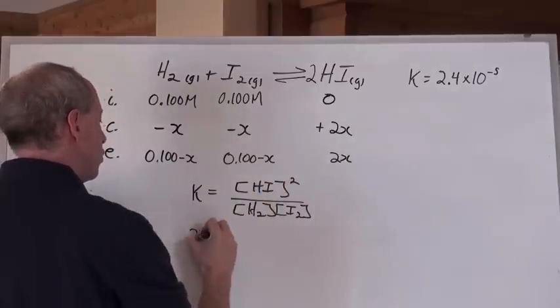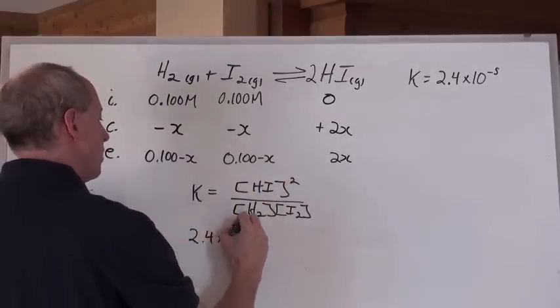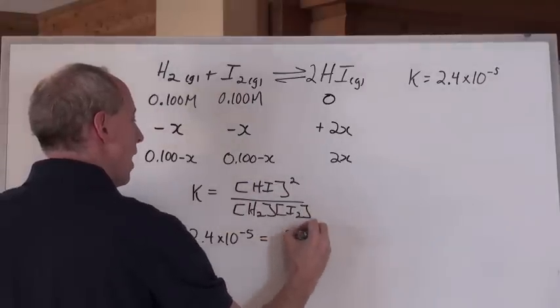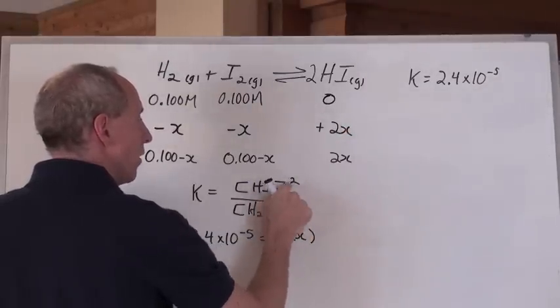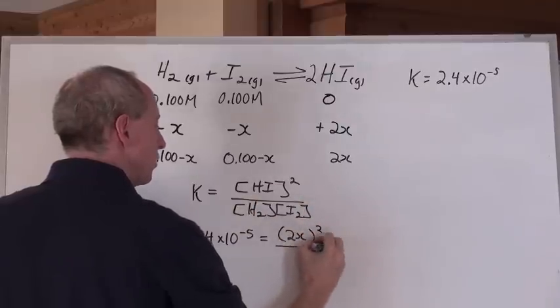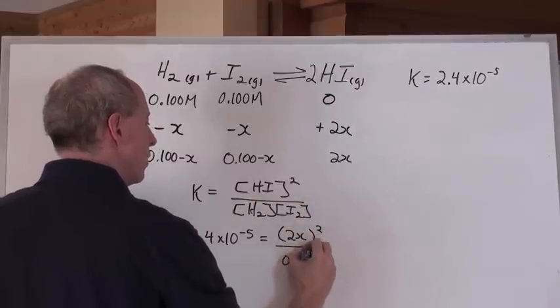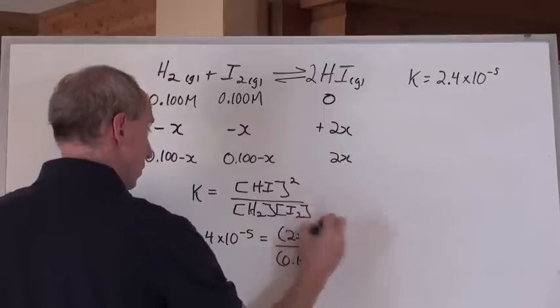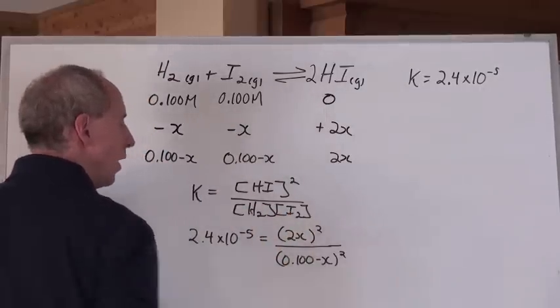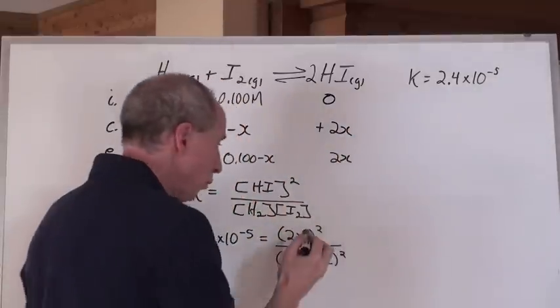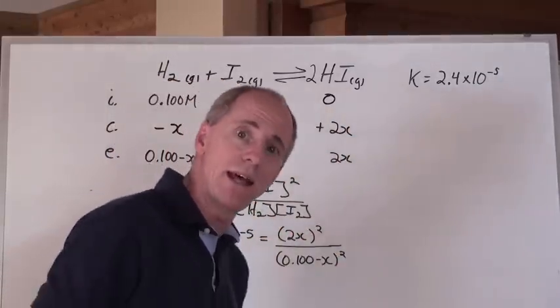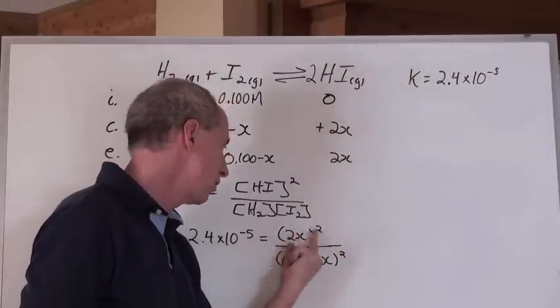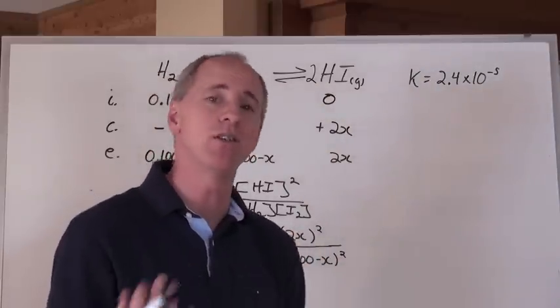Now substitute numbers in. 2.4 times 10 to the negative 5 equals, what's this? 2x, what is it? It's squared. So it's 2x squared over 0.100 minus x squared. And by the way, what does that equal if you actually expanded that out? That right there is 4x squared, and not 2x squared, right? You have to square the 2 and square the x. But in this case, you don't have to do either.